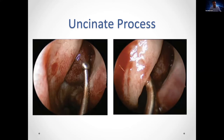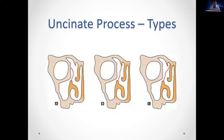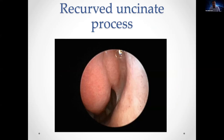There are three types of uncinate process attachment: type A to the lamina papyracea, type B to the skull base, and type C to the middle turbinate. This is useful descriptively; in surgery, going through the coronal CT scan to appreciate where the process is attached along its length is what's important, and ultimately you'll be removing it as part of the initial surgery.